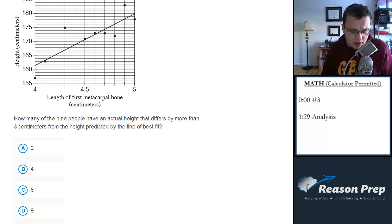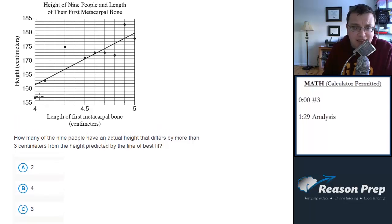So another question with line of best fit here, and we need to know how many of these nine people represented by these points in our graph here have a height that differs by more than three centimeters from what would be predicted by the line of best fit.